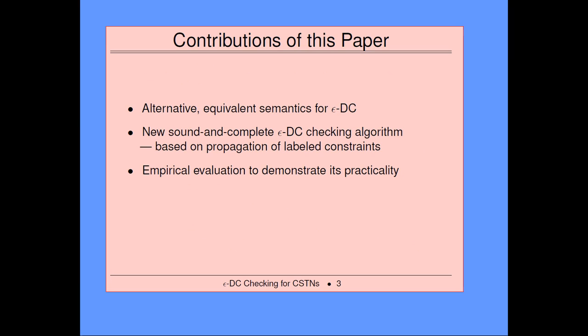The contributions of our paper: first, we provide an equivalent semantics for epsilon-DC. It turns out this different characterization was more useful to us for proving completeness in particular. Then we extended our previous algorithm so that it works for epsilon-DC checking — it's still based on the propagation of labeled constraints. And we provide a basic empirical evaluation.